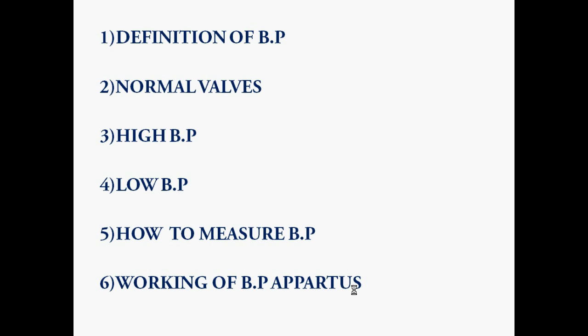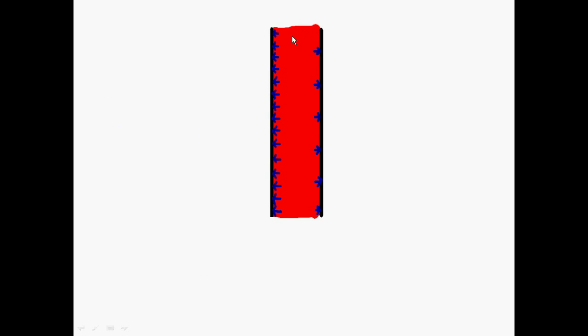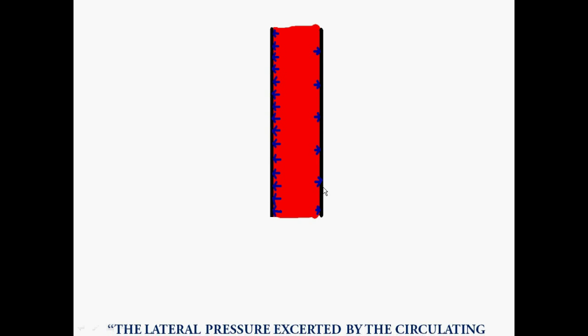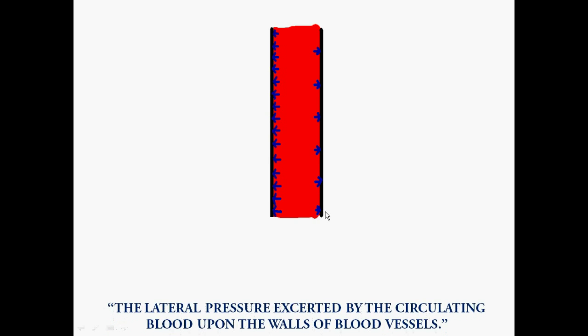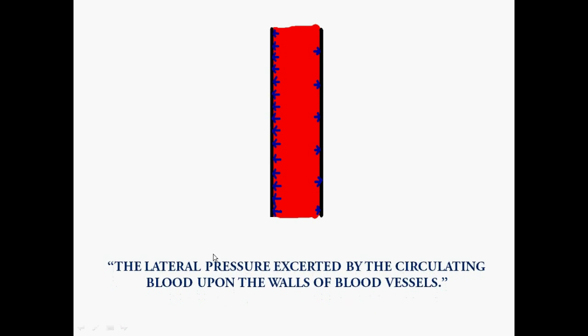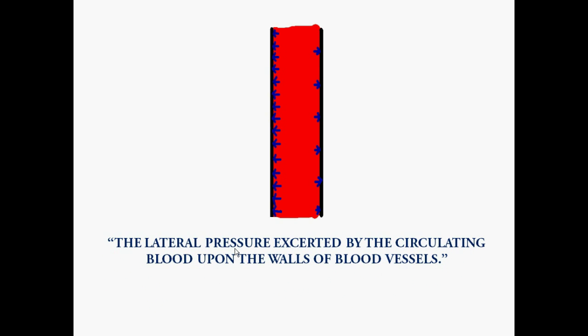We all know that blood is circulating all over the body through blood vessels. While circulating, the blood exerts some pressure on the walls of blood vessels, and that pressure is called blood pressure. By definition, it is the lateral pressure exerted by the circulating blood upon the walls of blood vessels.